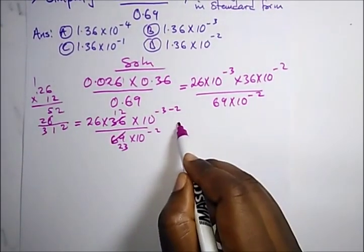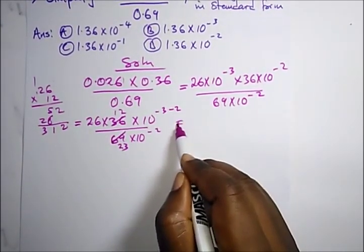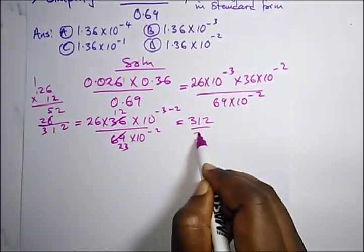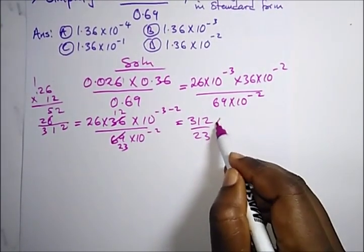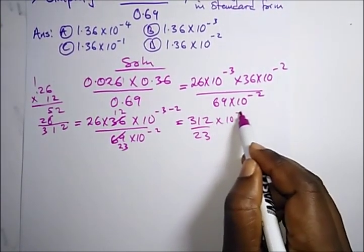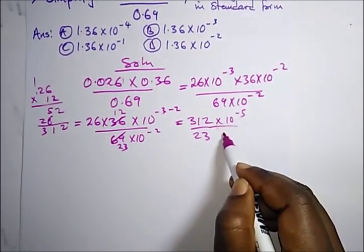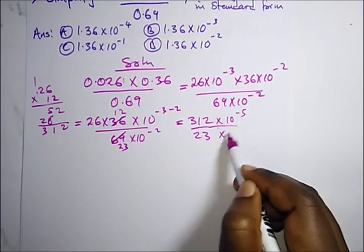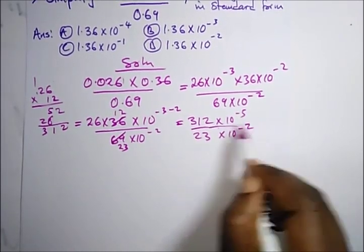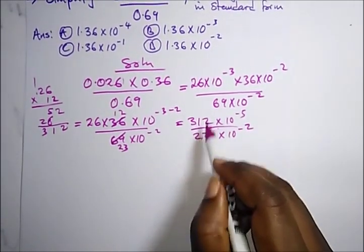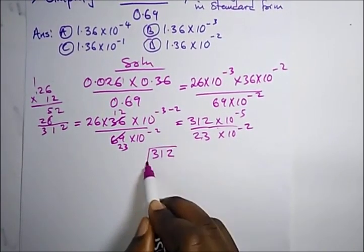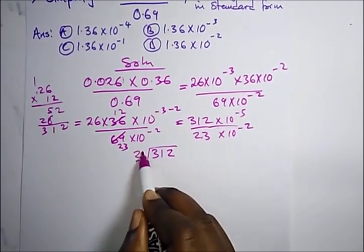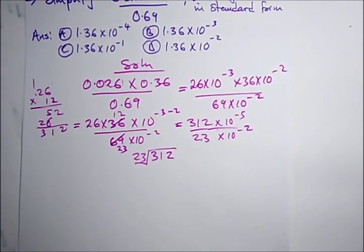So we are left with 312 over 23, times 10^(−5) over 10^(−2). Let's do a long division of 312 divided by 23.